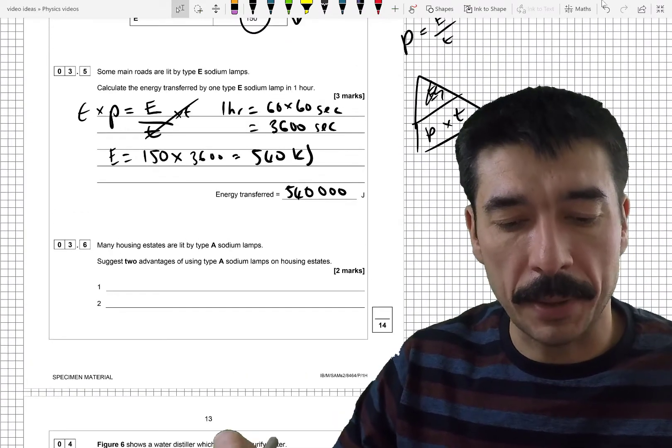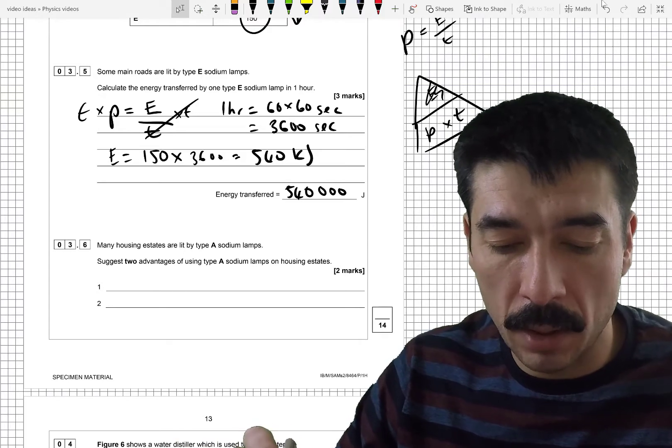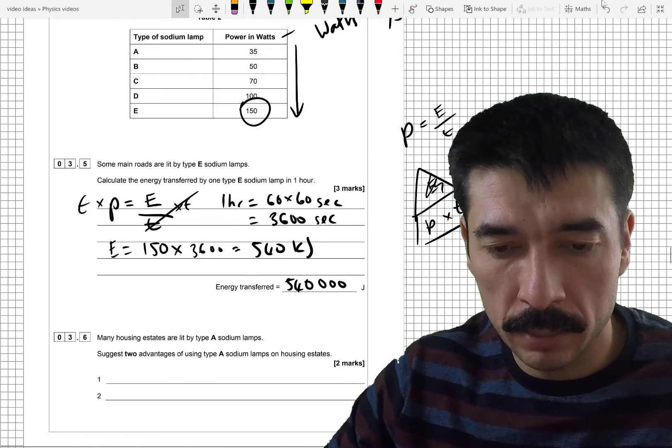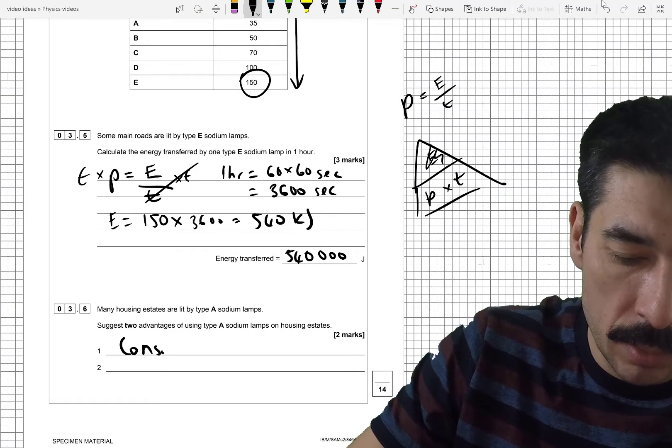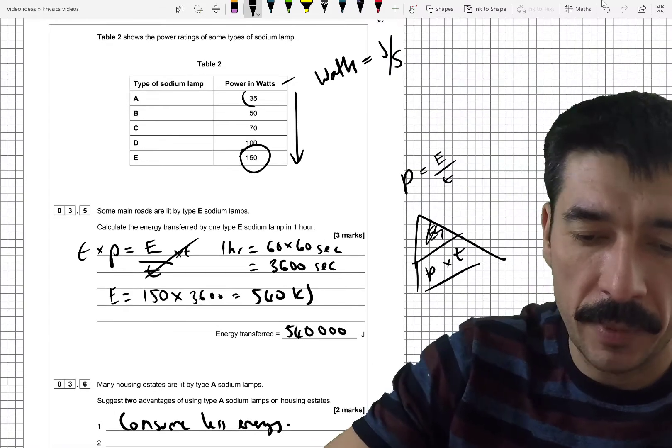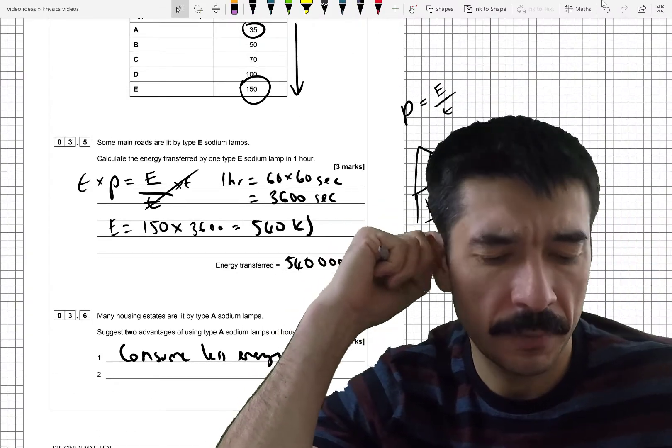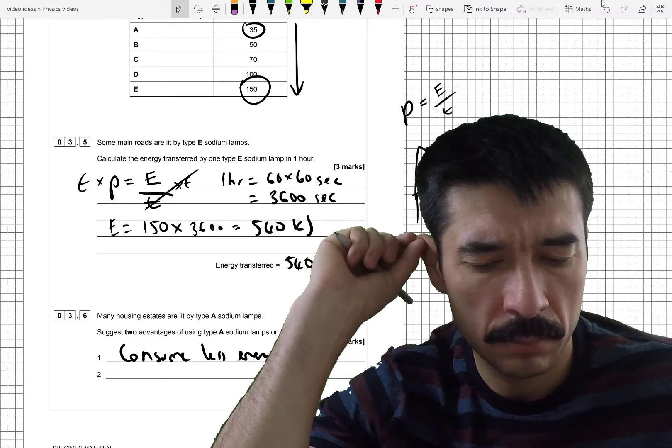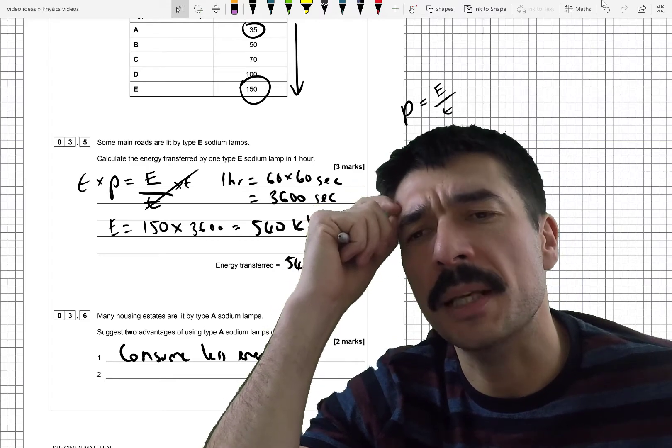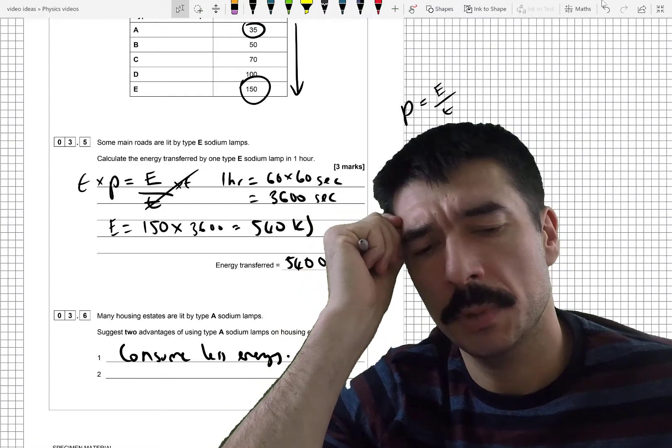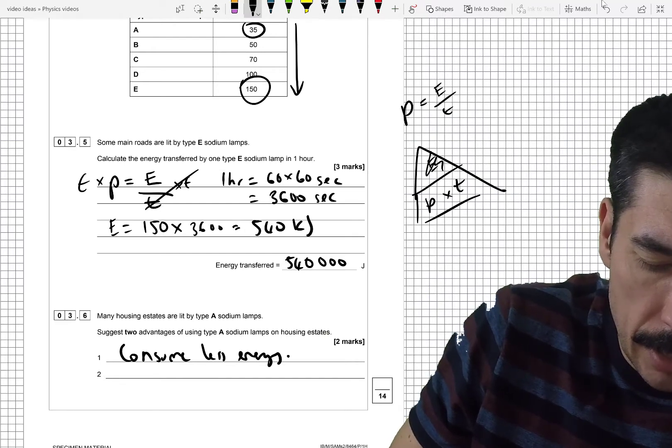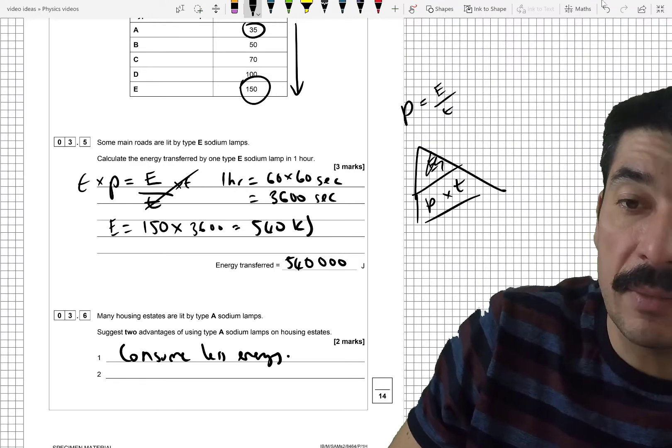Right, many housing estates are lit by type A sodium lamps. Just two advantages of using type A sodium lamps on housing estates. Well, I'm going to say consume less energy. Right? Because I can see that from the information they've given me. Another advantage. Well, I actually don't think... Unless you know something else about sodium lamps, they give out a weird orange light. So, they consume less energy. I suppose then, as a result, they consume less energy, so they can have less environmental impact.